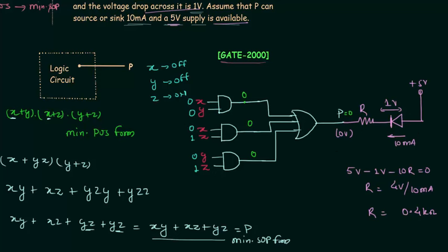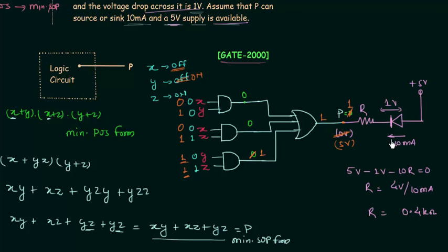If only one pump is failing — say X is off, Y is on, Z is on (X=0, Y=1, Z=1) — the AND gate with inputs y and z outputs 1, so the OR gate output is 1 and P = 1, meaning 5V at that point. The LED is not forward biased and remains off. The indicator on the panel does not glow because two pumps are still working. This concludes the problem. See you in the next lecture.